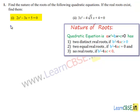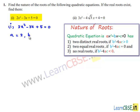The first equation given is 2x² - 3x + 5 = 0. On comparing this with the standard equation ax² + bx + c = 0, we get a = 2, b = -3, and c = 5.